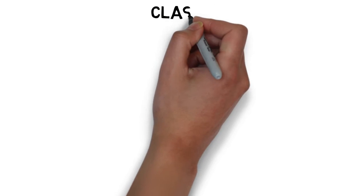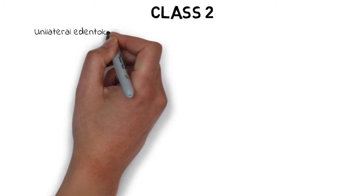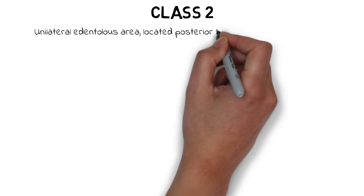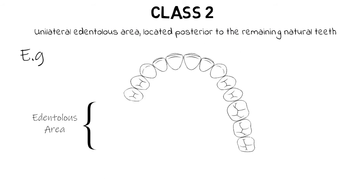Class 2 states that there is a unilateral edentulous area located posterior to the remaining natural teeth. The teeth are absent only on one side, either the left or the right, and are still behind the remaining natural teeth. This state is classified as Class 2.